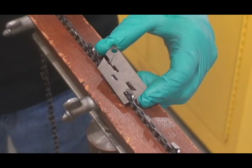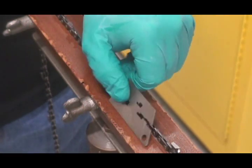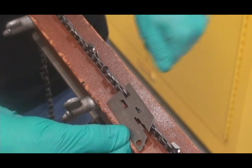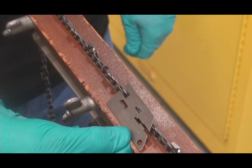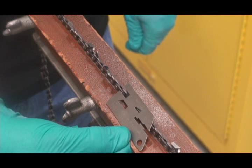By using the Carlton file plate, you can significantly increase the life of your chain while maintaining that out-of-the-box performance. No other tool on the market today offers the precision and simplicity of the Carlton file plate when it comes to maintaining your saw chain.